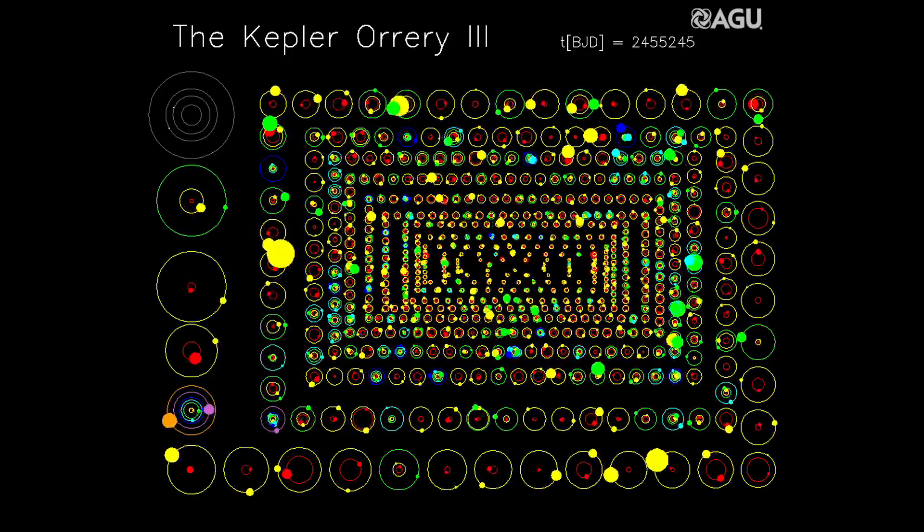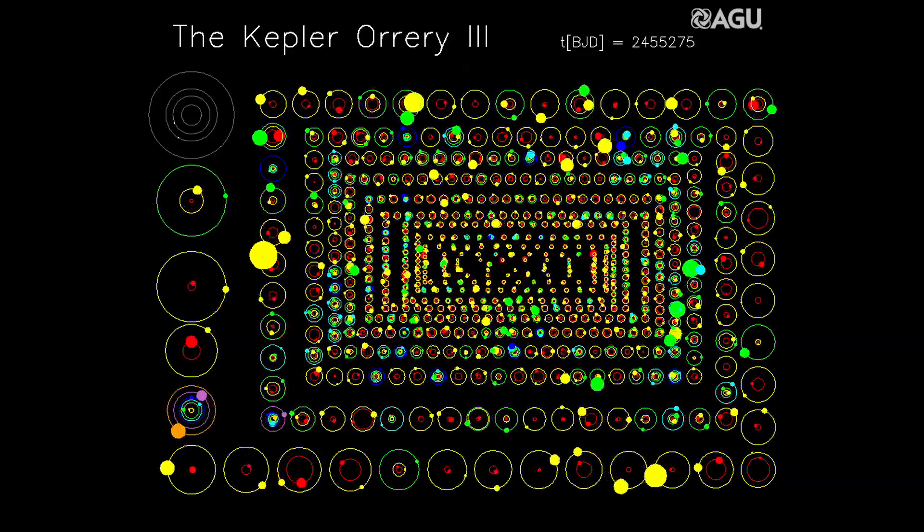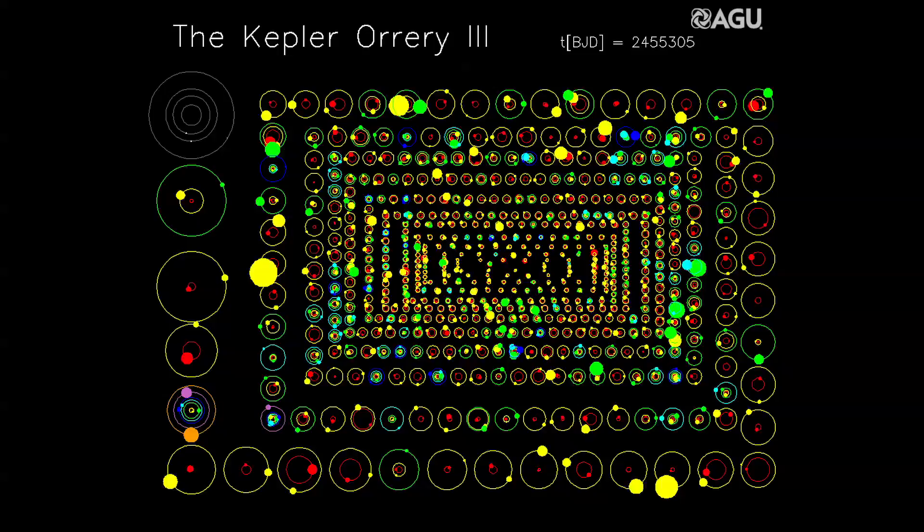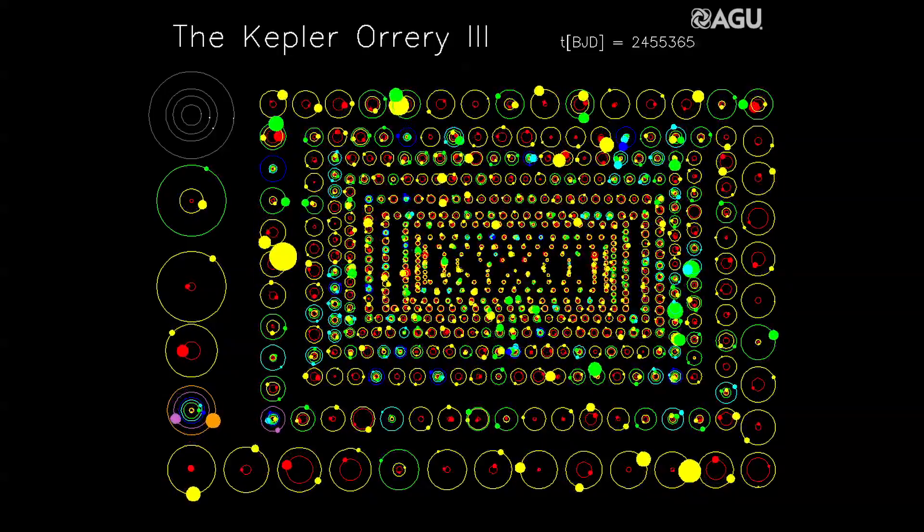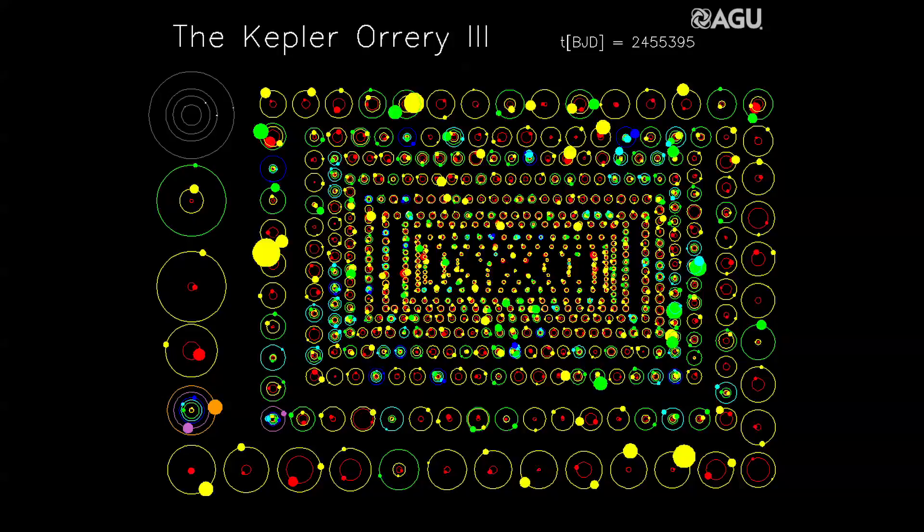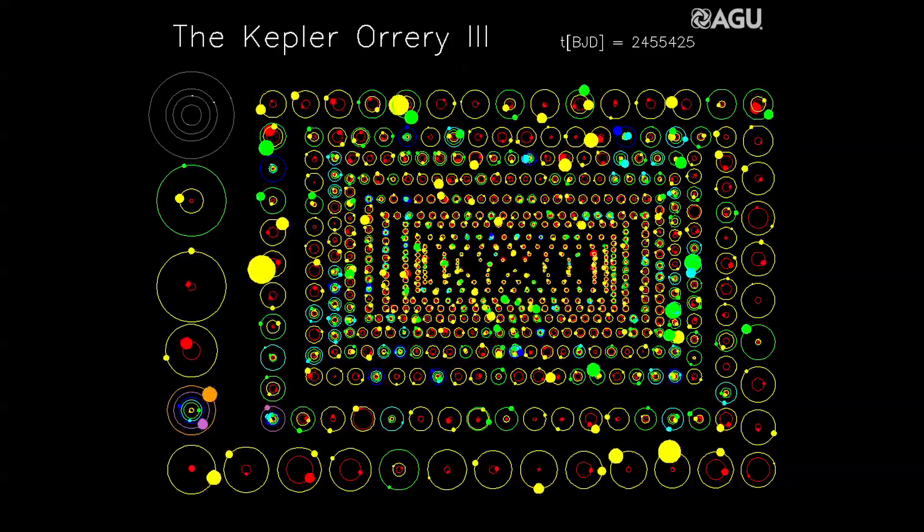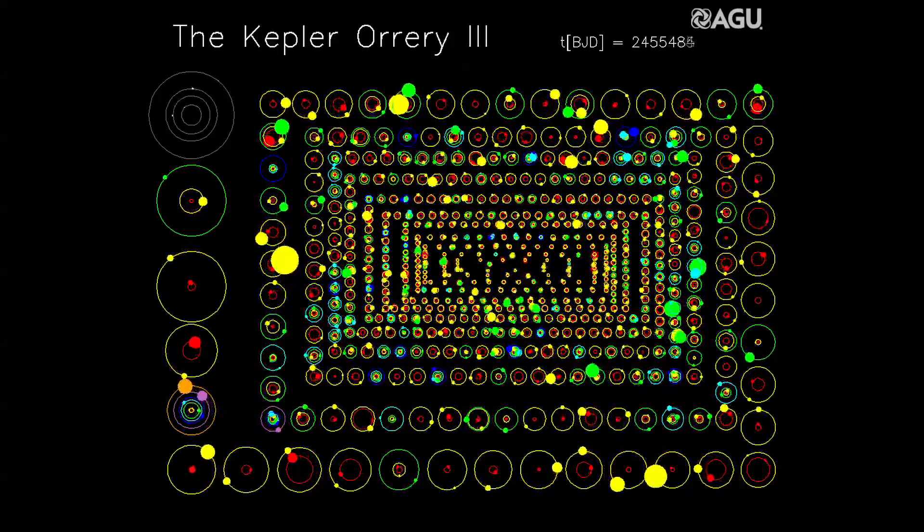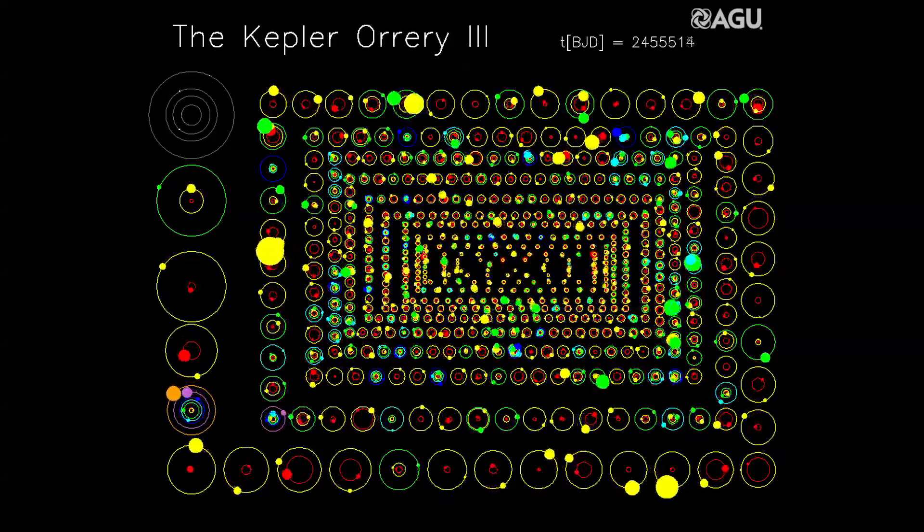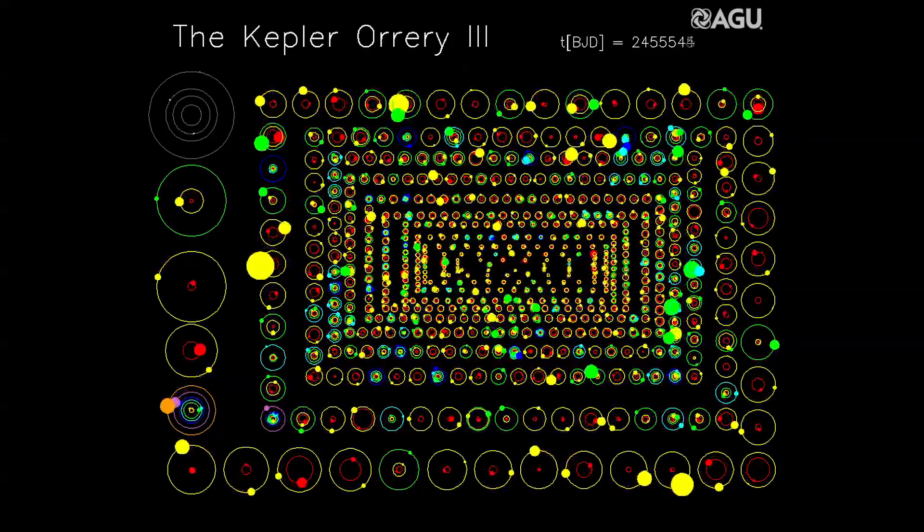NASA's Kepler spacecraft has discovered hundreds of candidate multiple-planet systems around stars other than our Sun. These planetary systems are represented in this movie, which shows how the planets move around their stars during the four years of the Kepler planet mission.